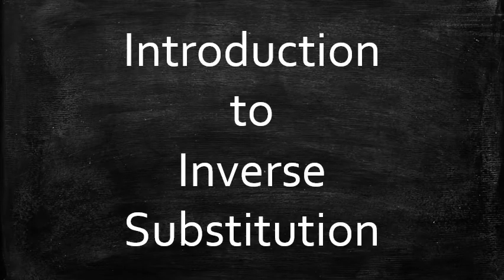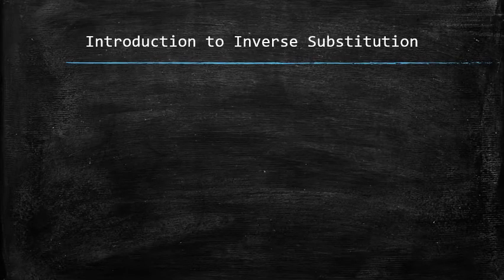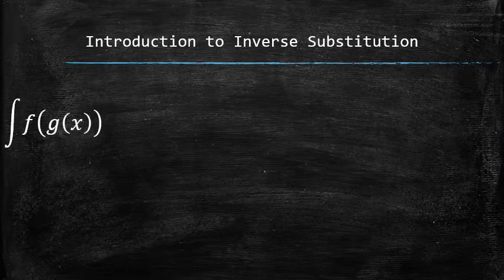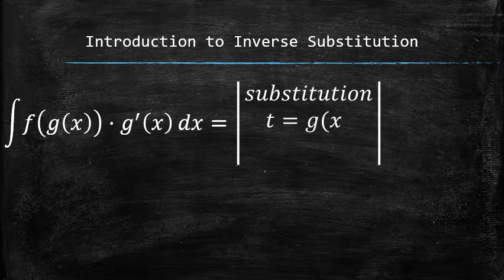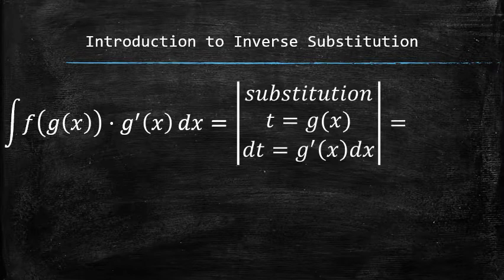Next, we introduce an integration technique called the inverse substitution. Previously we learned how to turn the chain rule for differentiation into an integration technique called substitution, in which we introduced a new variable, let's say t, to be equal to some function of x. To complete the substitution, we have to find the differential of t and replace every occurrence of x in the original integrand with some expression in terms of t.